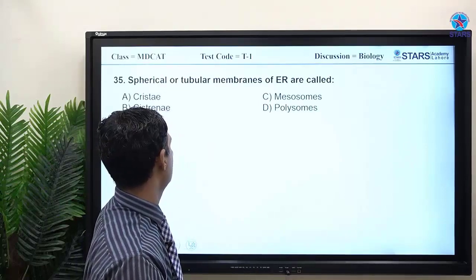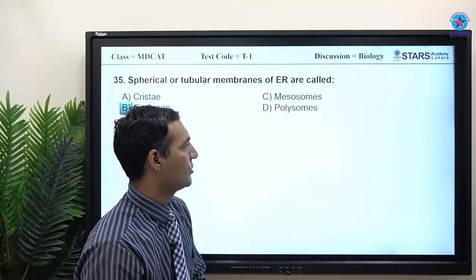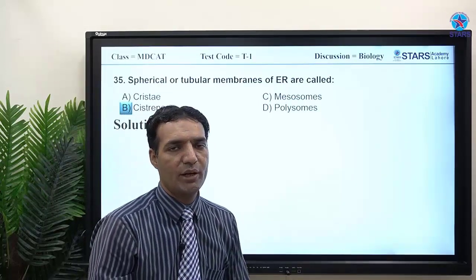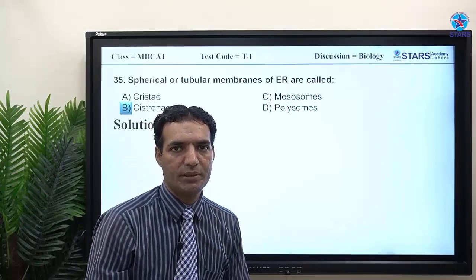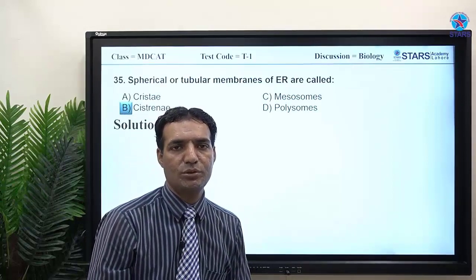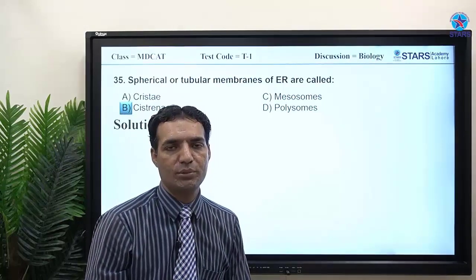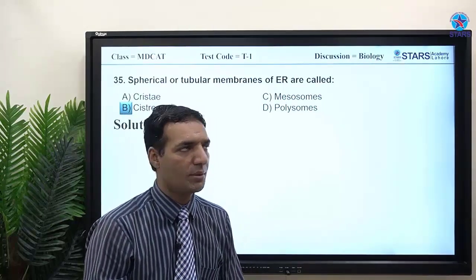MCQ 35: spherical or tubular membranes of endoplasmic reticulum are called cisternae. Cisternae are the single-membrane-bound sacs found in both the endoplasmic reticulum and the Golgi apparatus.